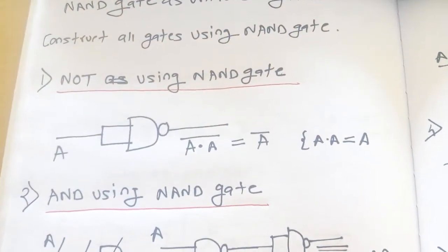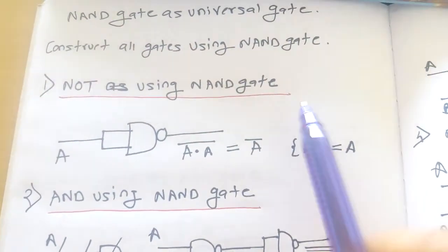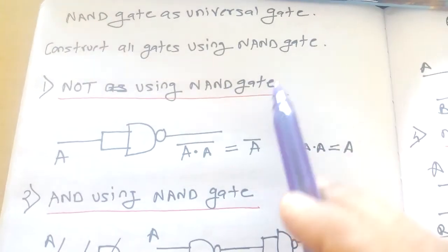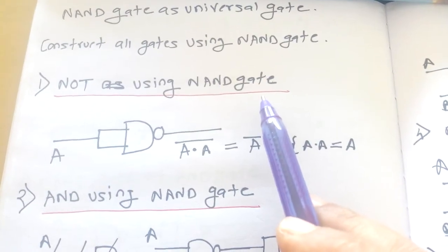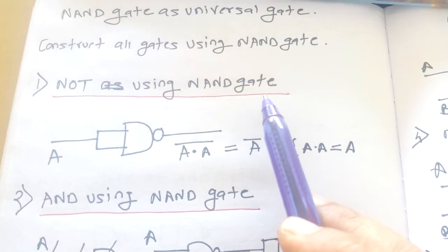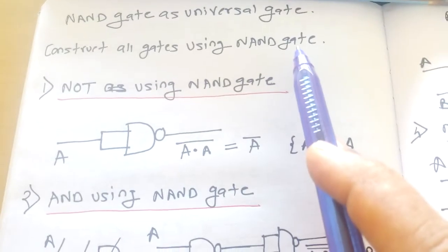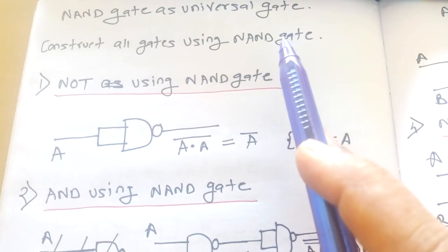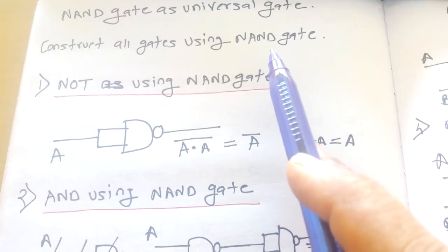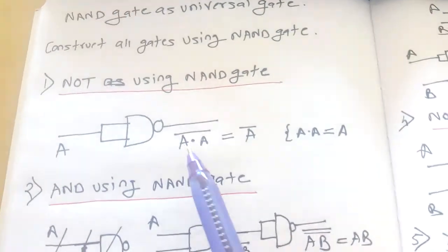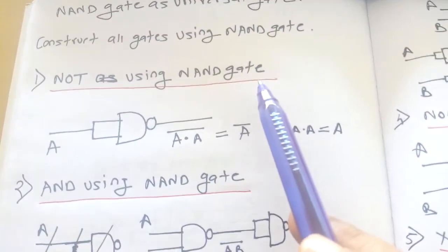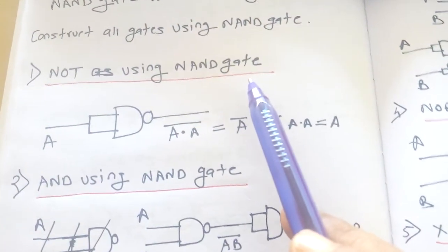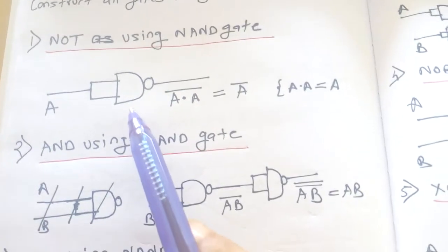Hello students. In this video we will see how to use NAND gate as a universal gate. A universal gate means each gate can be constructed using it. The examples of universal gates are NAND and NOR gates. Let us see how we can construct gates using NAND gate.